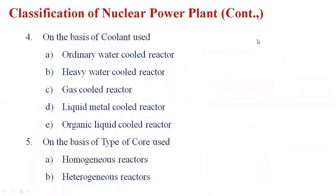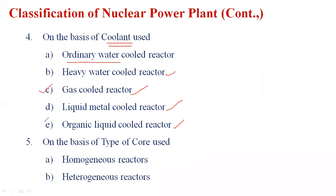The fourth classification is based on coolant used. The types are: ordinary water cooled reactor, heavy water cooled reactor, gas cooled reactor, liquid metal cooled reactor, and organic liquid cooled reactor. The fuel cost is maximum for coolant purpose. If you go for gas cooled or organic liquid or liquid metallic cooled reactors, the cost increases further. At present, the per unit cost generated in a nuclear power plant is around 20 rupees.